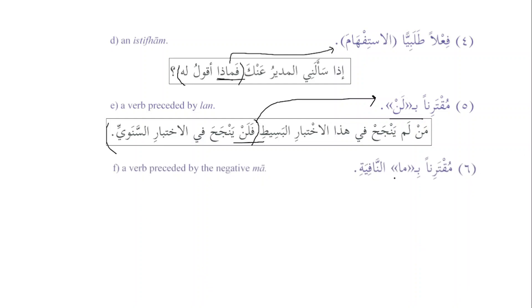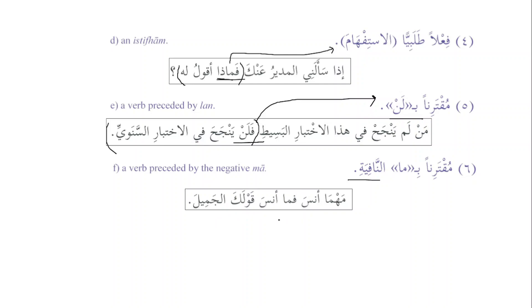Muqtarinan bi-ma al-nafiyya: the jawab al-shart should be connected with ma al-nafiyya. 'Mahma ansa fa-ma ansa qawlaka al-jamila' — whatever I may forget, I will not forget your beautiful words. The jawab al-shart has ma al-nafiyya. To summarize: when jawab al-shart is jumla ismiyya, or jumla talbiyya, or preceded by lan, or has ma al-nafiyya, fa will be added.